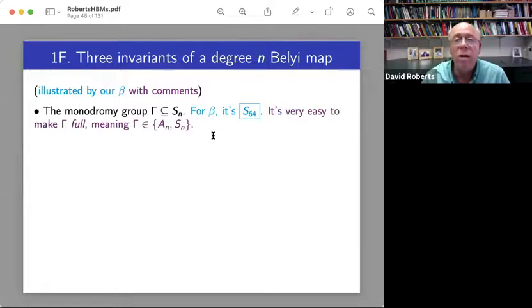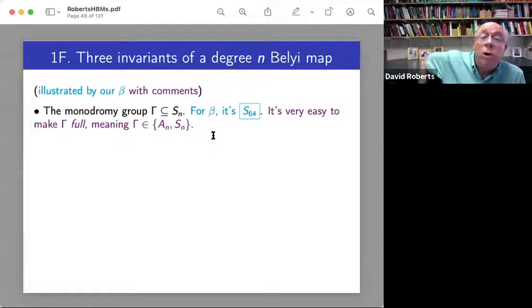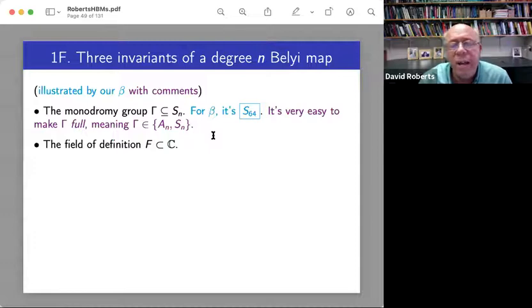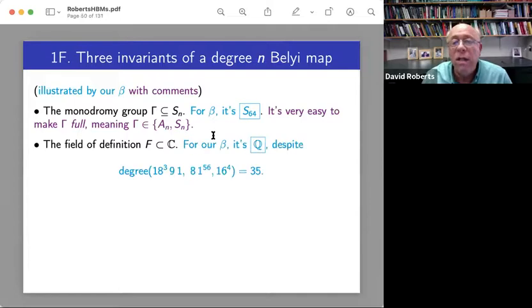So here are three invariants of a degree n Belyi map. So this is the big three I mentioned on my overview slide. So there's the monodromy group. It's some subgroup of SN. So for our particular beta, it's all of S64. And this is not exciting.